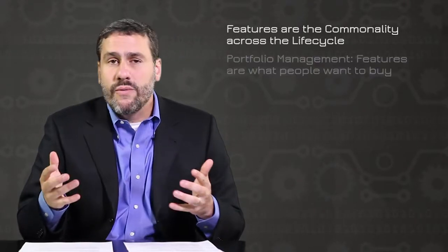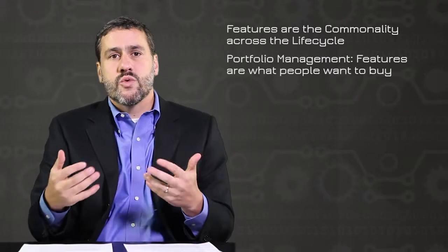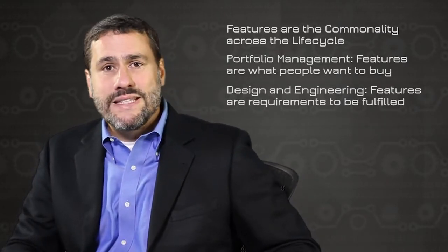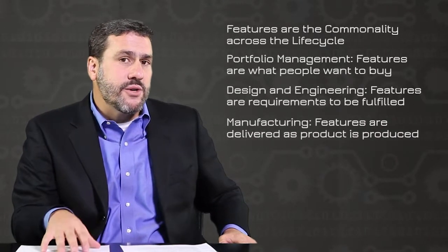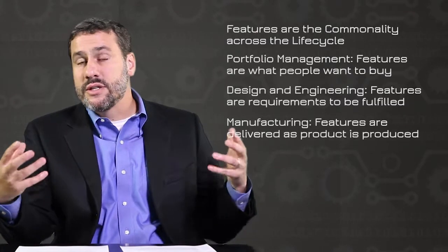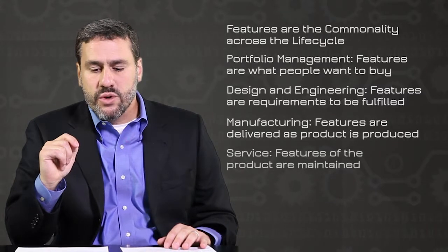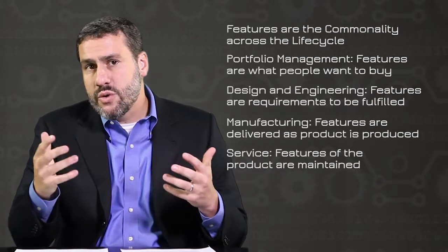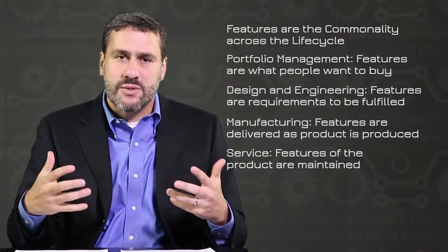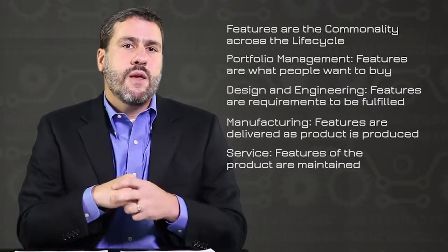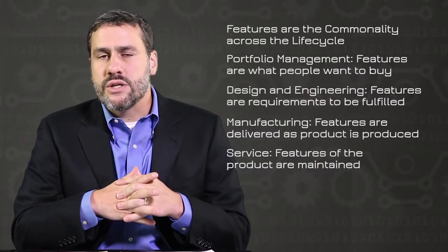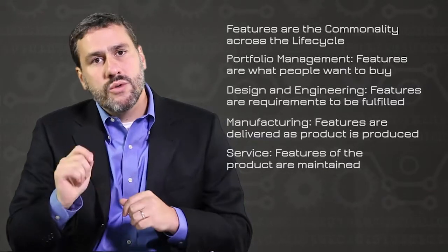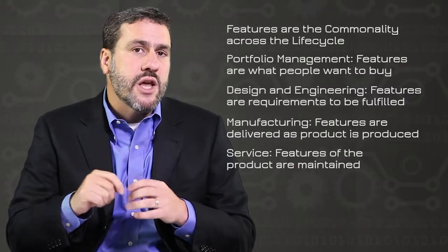Features serve as a common language across the lifecycle. For portfolio management, features are the capabilities that customers want to be able to buy. For design and engineering, features manifest themselves as requirements and are fulfilled by detailed design. In manufacturing, features are the things that are added or delivered as the product rolls down the assembly line. And in service, they maintain features and configured variants within the product family or portfolio. Features manifest themselves in all the different phases of the life cycle, but they do so in very different ways — features mean different things to different organizations. Importantly, features can be used as a communication medium to all those different systems, and that is an opportunity to propagate change across them.